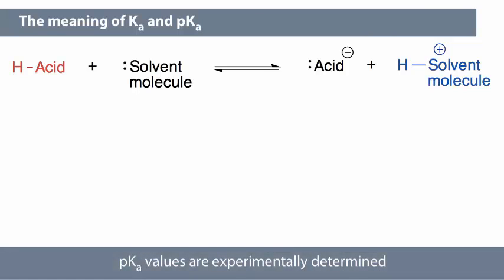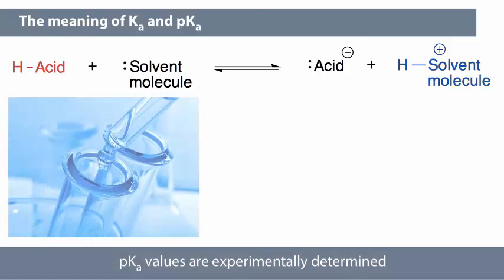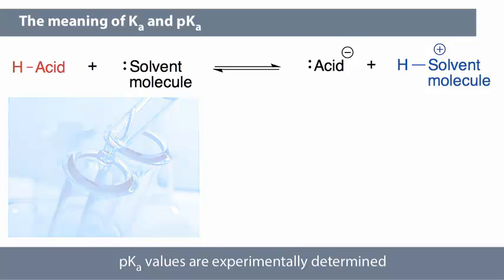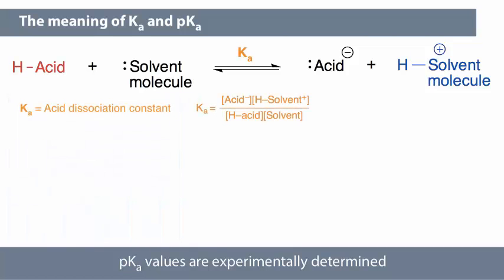These values are experimentally determined by dissolving an acid in a given solvent, usually water or dimethyl sulfoxide. The Ka, or acid dissociation constant, is determined for the reaction. We take the negative log of the Ka to calculate the pKa.